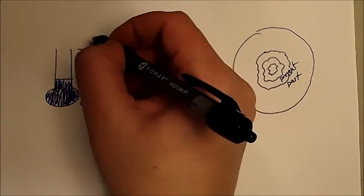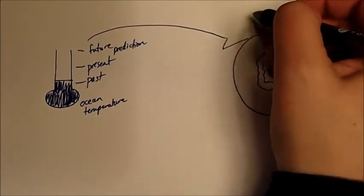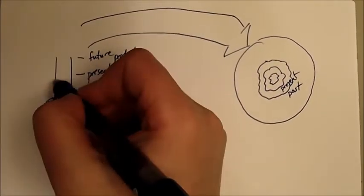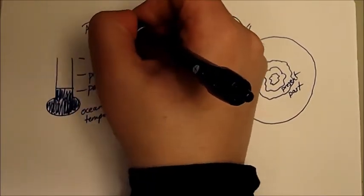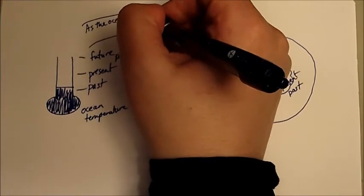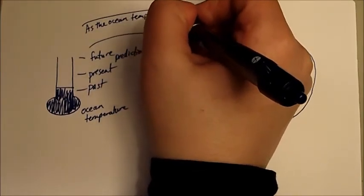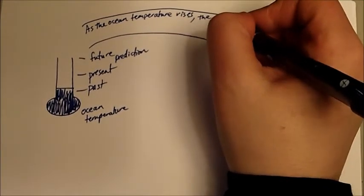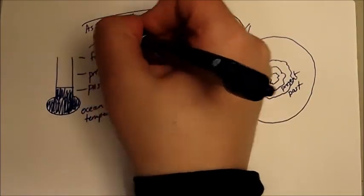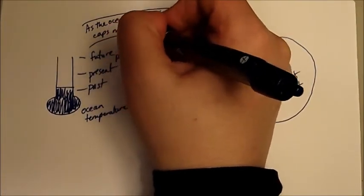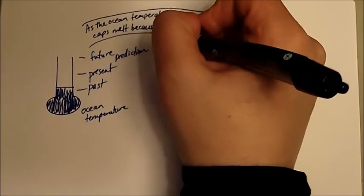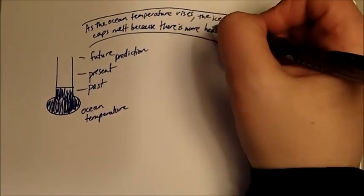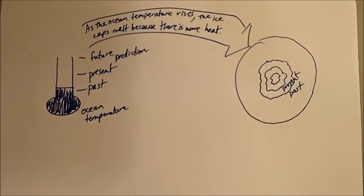What does this look like in terms of a loop? Let's draw our arrow. So we see that as the temperatures rise, as the ocean temperature rises, the ice caps melt because there is more heat. Could also put, because there's more heat in the water, specifically.